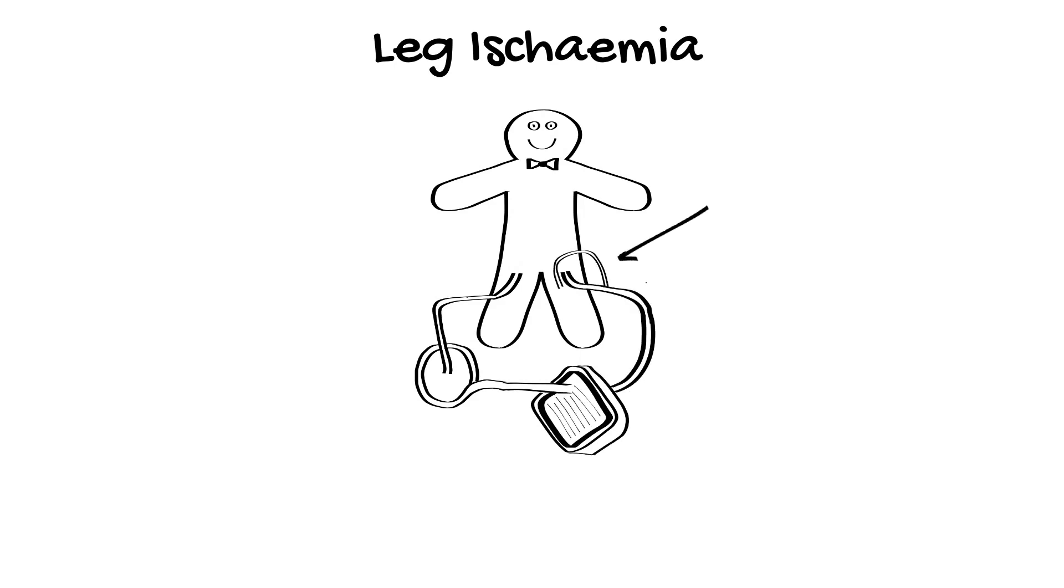The complication of leg ischemia has already been discussed. It is prevented with insertion of a backflow cannula in the superficial femoral artery. The leg still requires regular vascular observation by monitoring non-pulsatile Doppler flow as the backflow cannula can develop thrombosis.